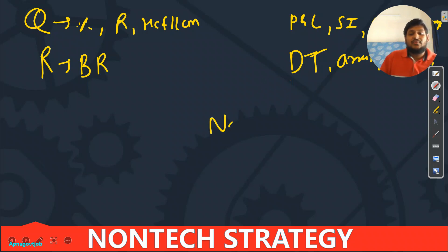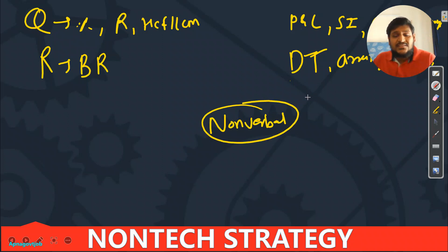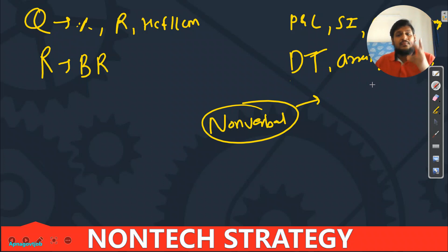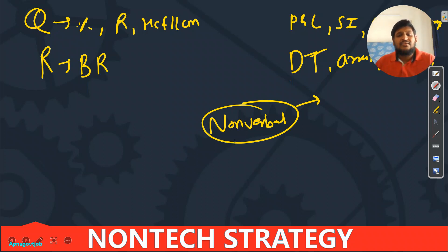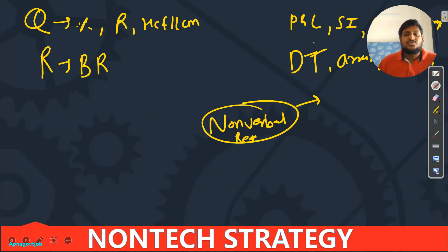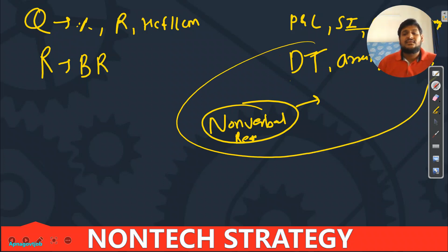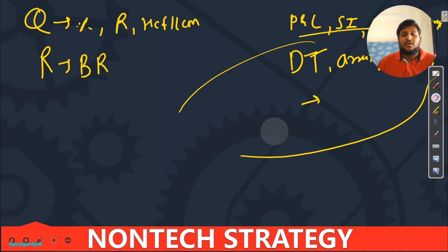For non-verbal reasoning, complete all chapters included: paper cutting, paper folding, mirror image, water image, counting figures, missing figures — everything. In RS Agarwal you will get all these things. So this completes the reasoning portion for phase 2.